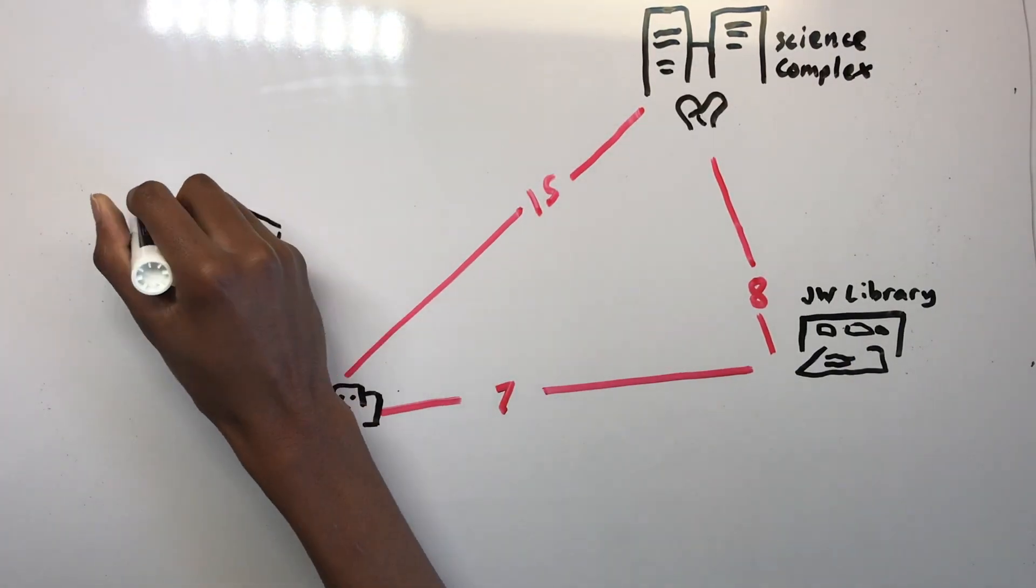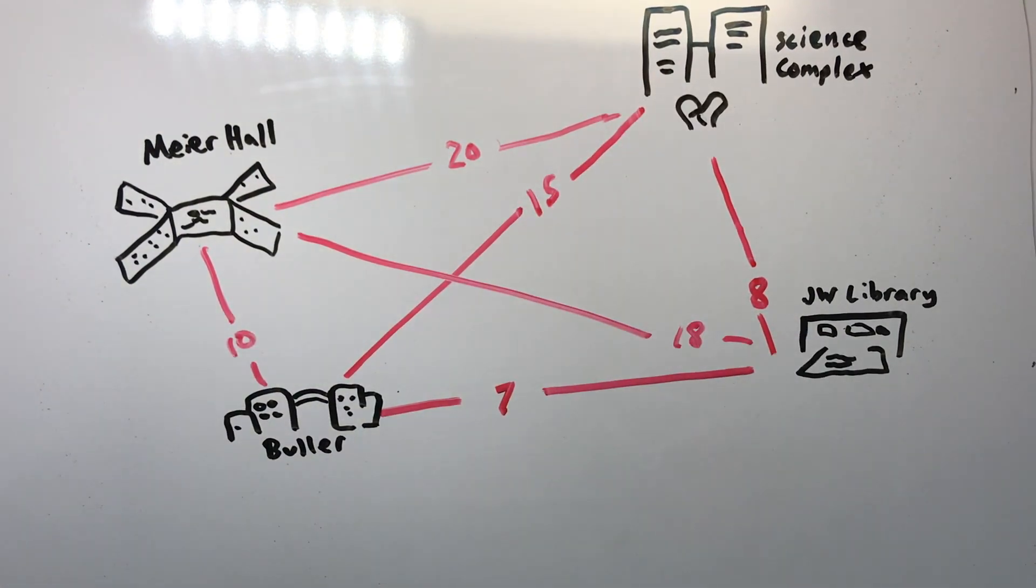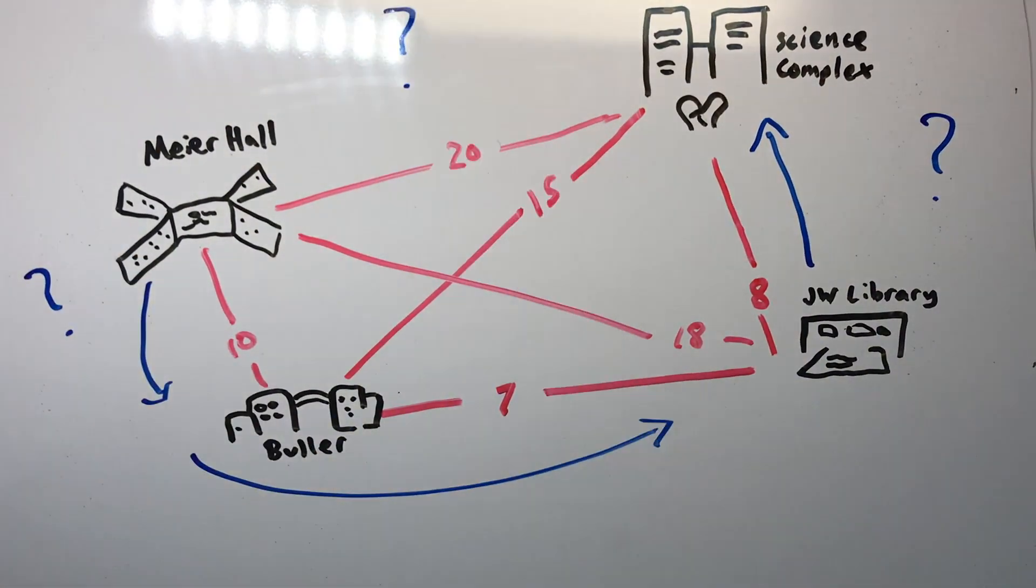In the standard version we study, the travel costs are symmetric in the sense that traveling from city X to city Y costs just as much as traveling from Y to X.